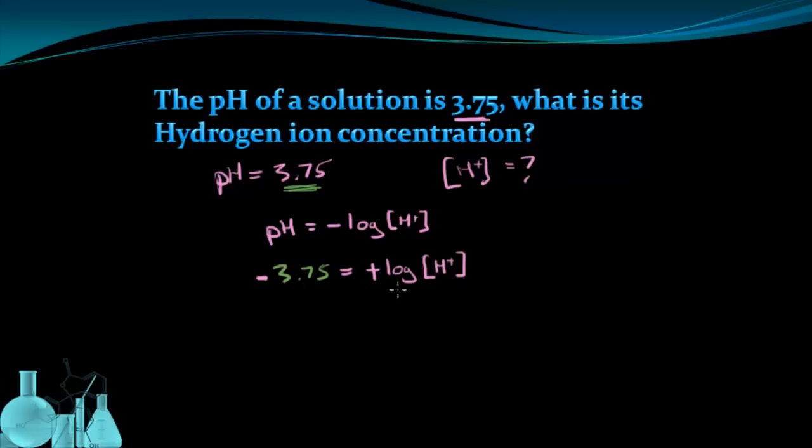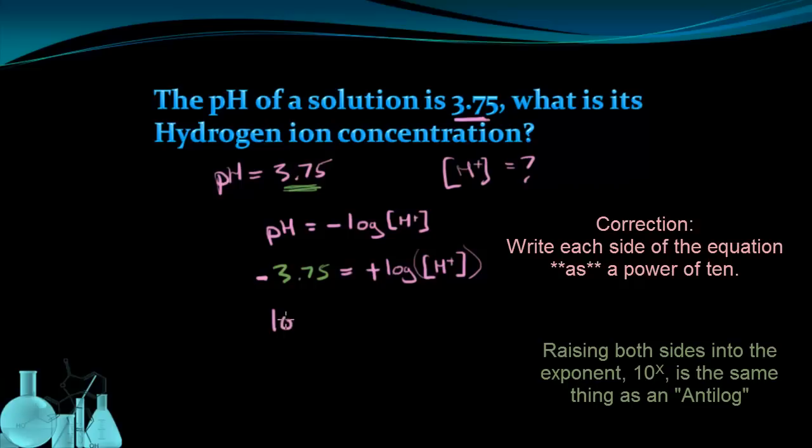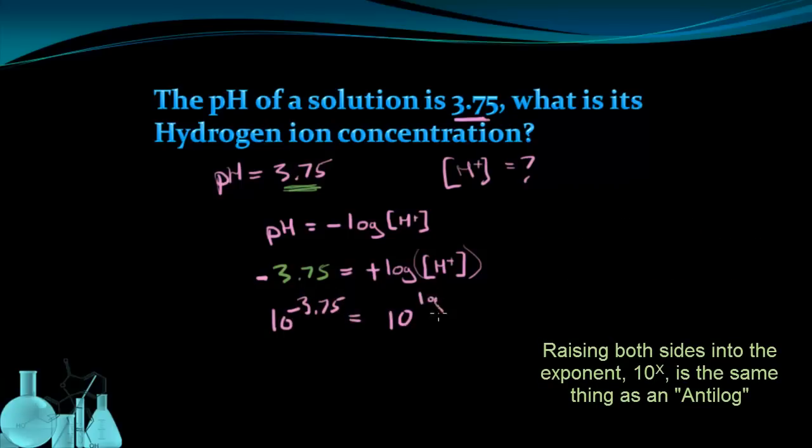Now I just need to undo this log concentration, because I want H+ by itself. Remember that a log is just looking for a power of 10. So what I can do is raise both sides to the power of 10. I can do 10 to the negative 3.75 on the left side, and 10 to the log of the H+ concentration.